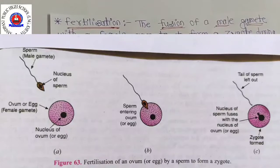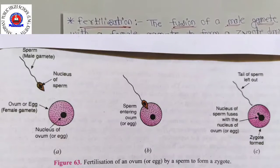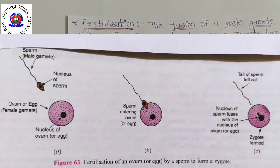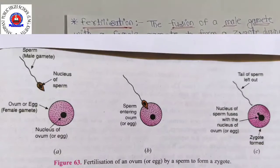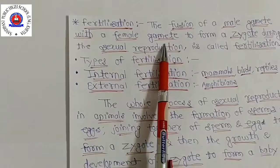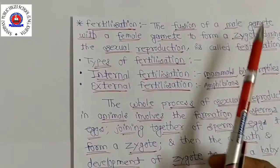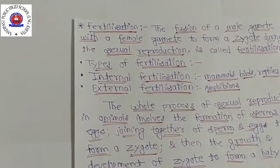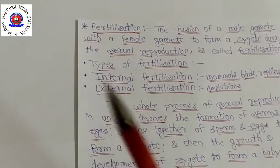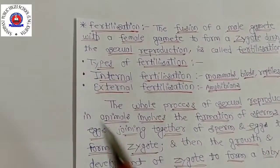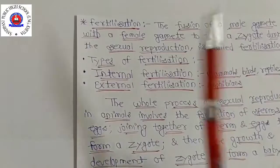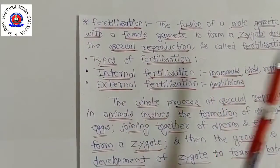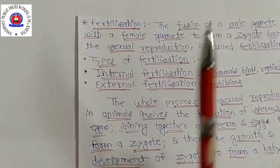For sexual reproduction to occur, a male gamete must combine or fuse with a female gamete. The fusion of a male gamete with a female gamete to form a zygote during sexual reproduction is called fertilization. In short, fertilization is when the sperm fuses with the ovum.